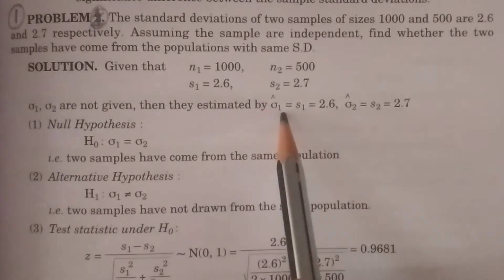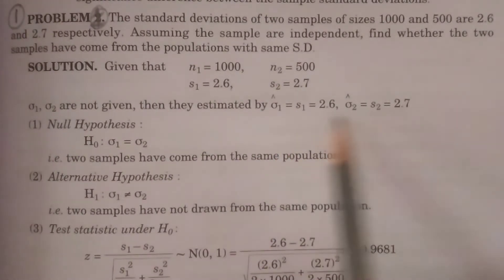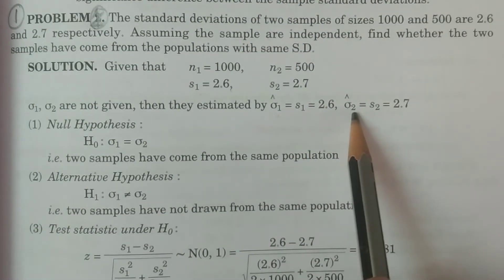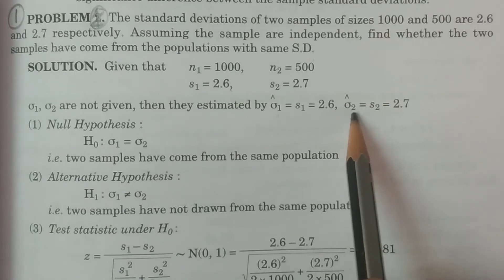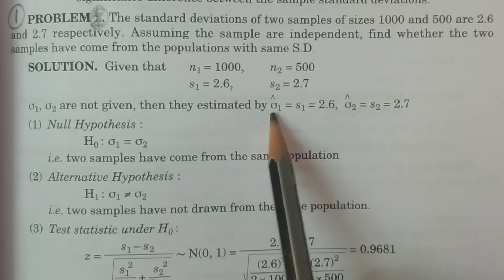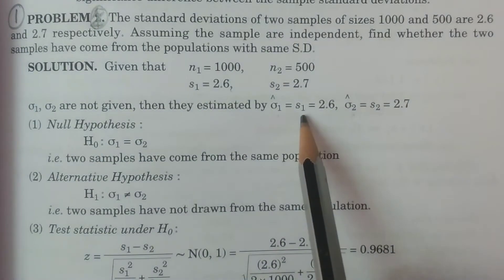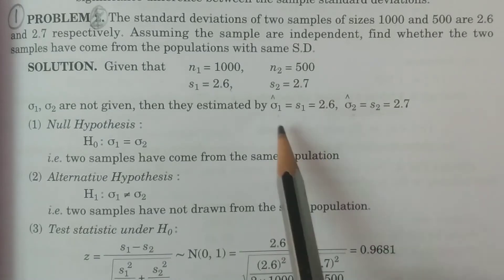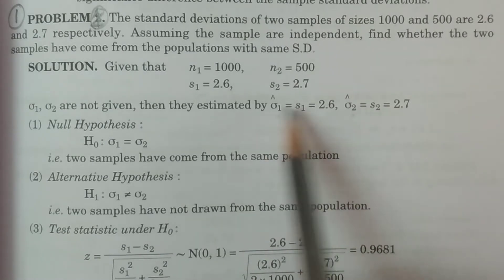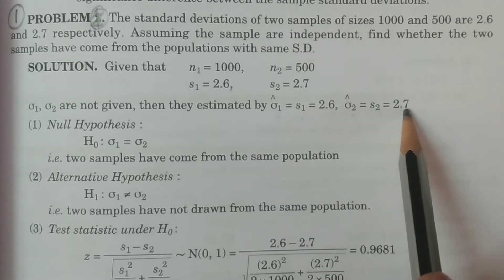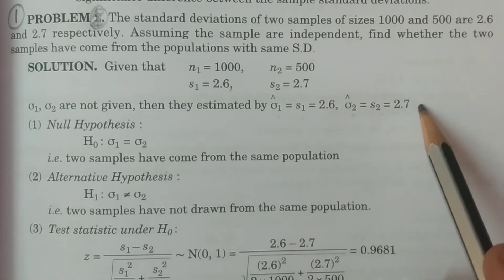They have to be estimated with S1 and S2. Sigma1 is the population standard deviation of the first population, and sigma2 is the population standard deviation of the second population. These are estimated as: sigma1-hat = S1 = 2.6 and sigma2-hat = S2 = 2.7. This is the procedure of estimation.